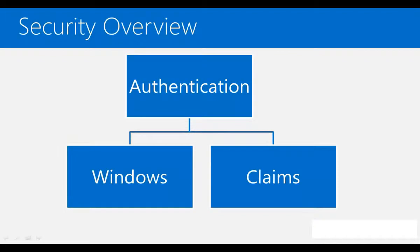We use claims authentication with credential stores like Active Directory when users are not within their domain, but want to access the application using their Active Directory credentials from outside the domain — for example, from home without a VPN. In the consumer space, claims authentication is primarily used to integrate with common online providers like Facebook or Microsoft account.